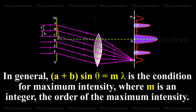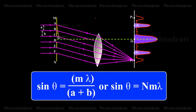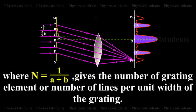In general, A plus B into sin theta equals M lambda is the condition for maximum intensity where M is an integer, the order of the maximum intensity. Sin theta equals M lambda by A plus B or sin theta equals N M lambda where N equals 1 by A plus B gives the number of grating elements or number of lines per unit width of the grating.